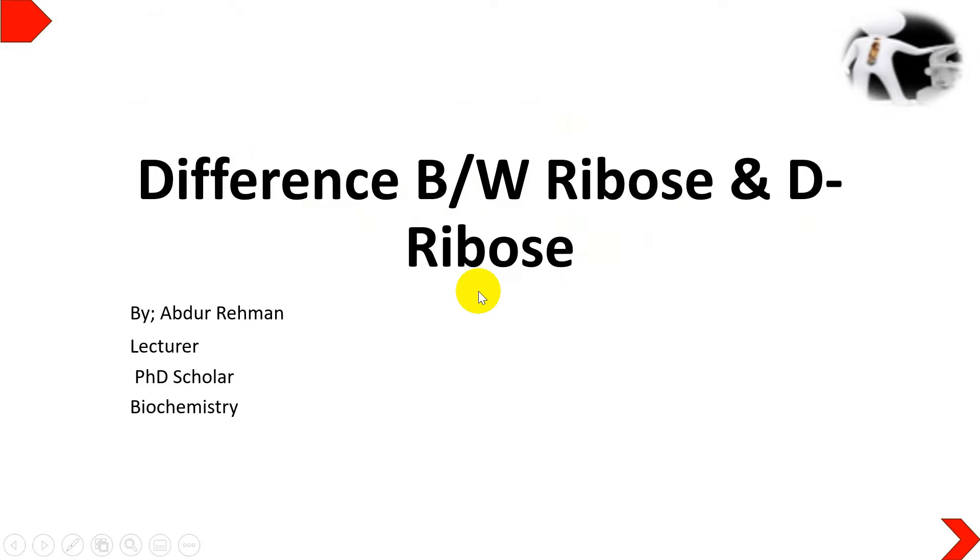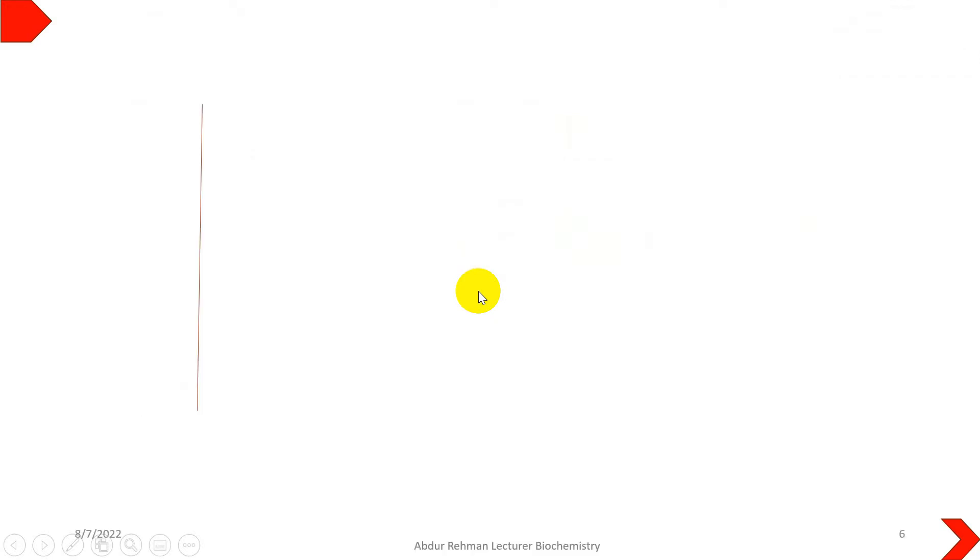Ribose is a 5-carbon monosaccharide with an aldehyde group attached to it. It is also known as aldopentose.